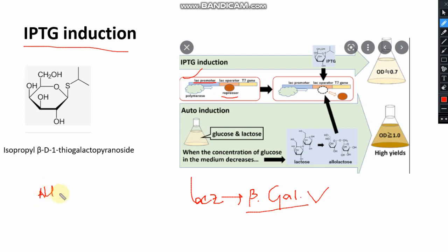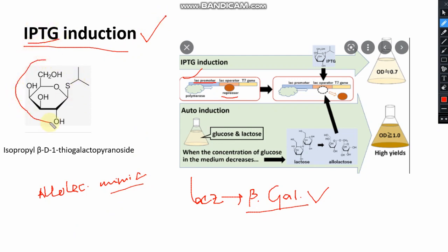IPTG is an allolactose mimic and a semi-synthetic compound. This is the structure of IPTG, and the chemical name is isopropyl beta-D-1-thiogalactopyranoside.